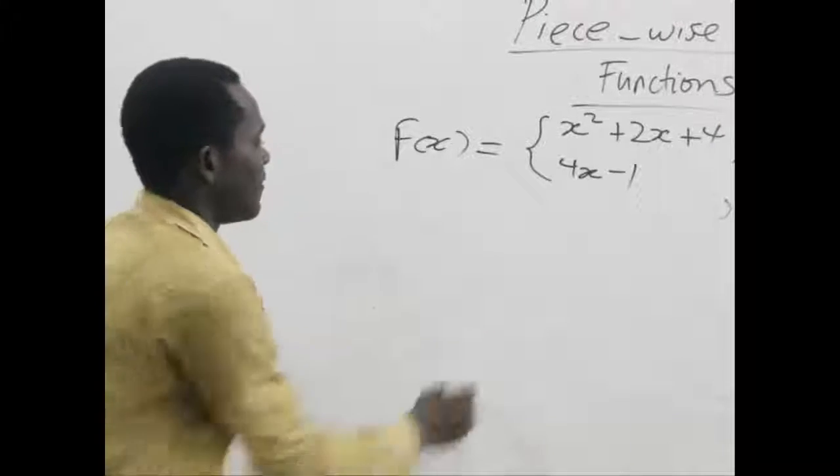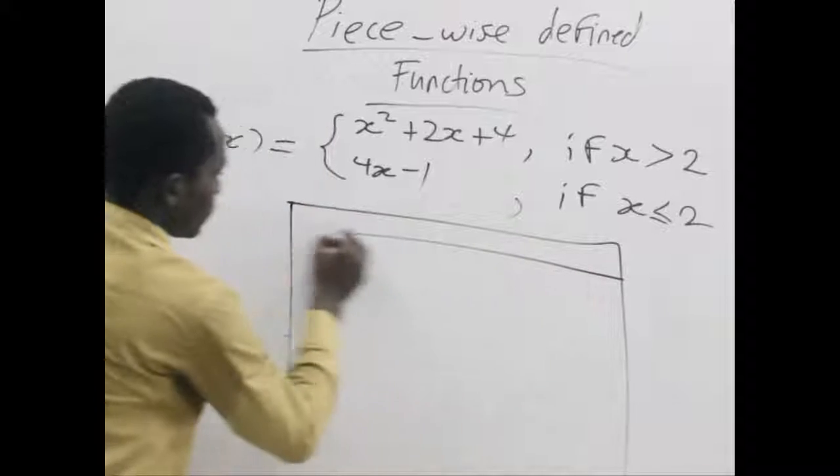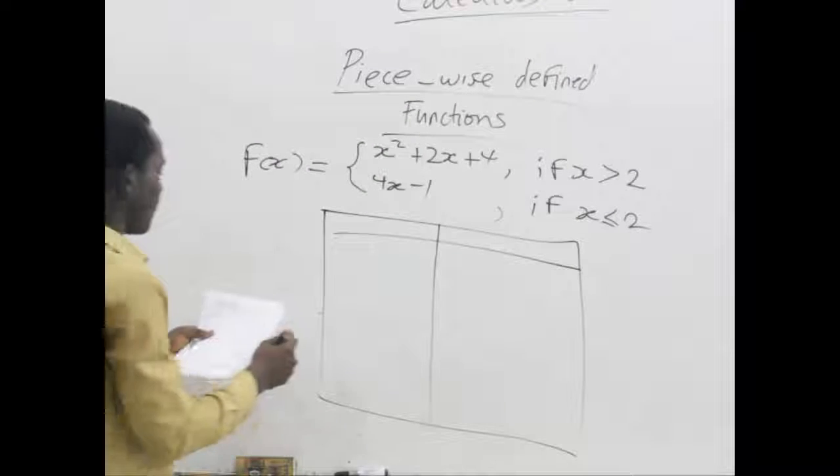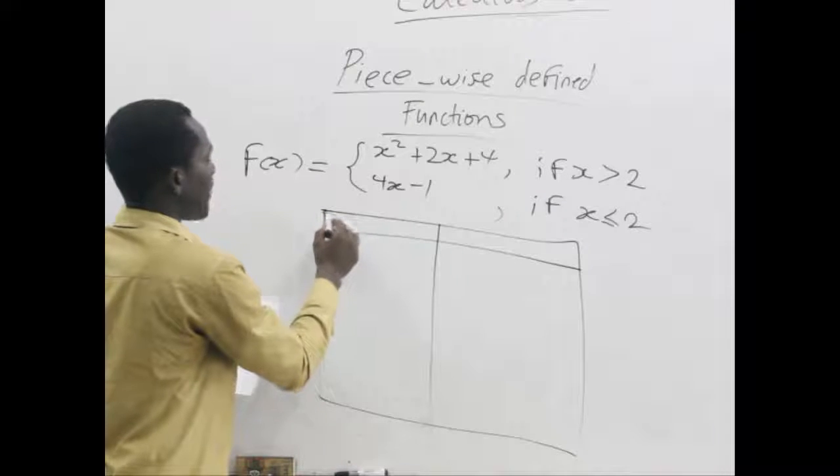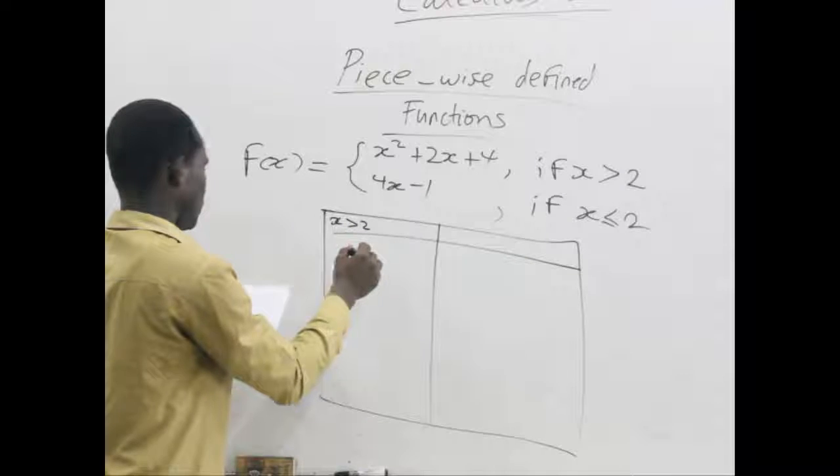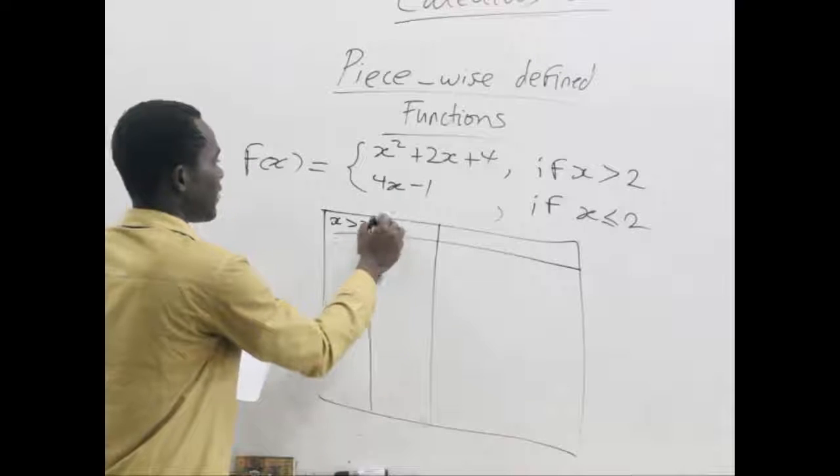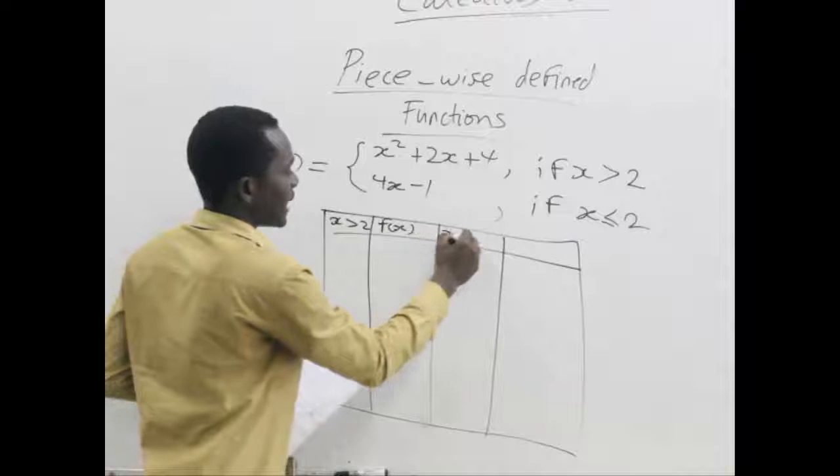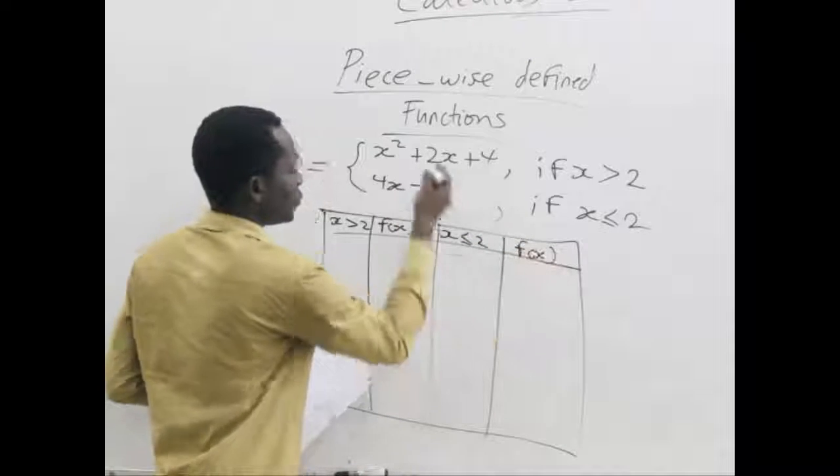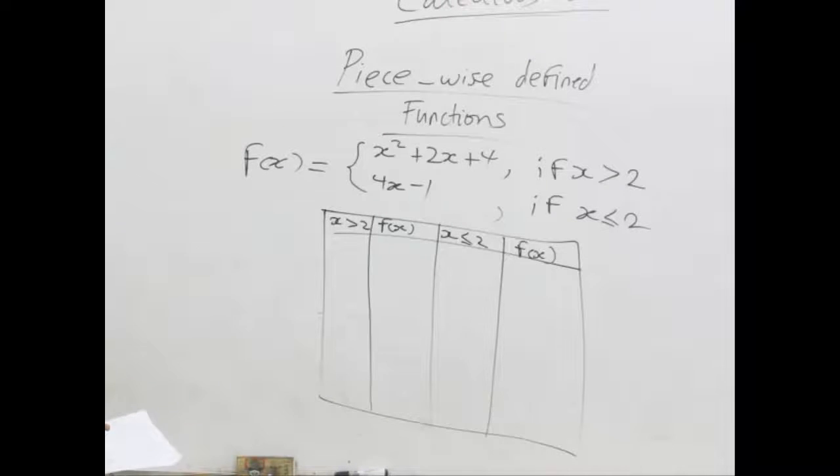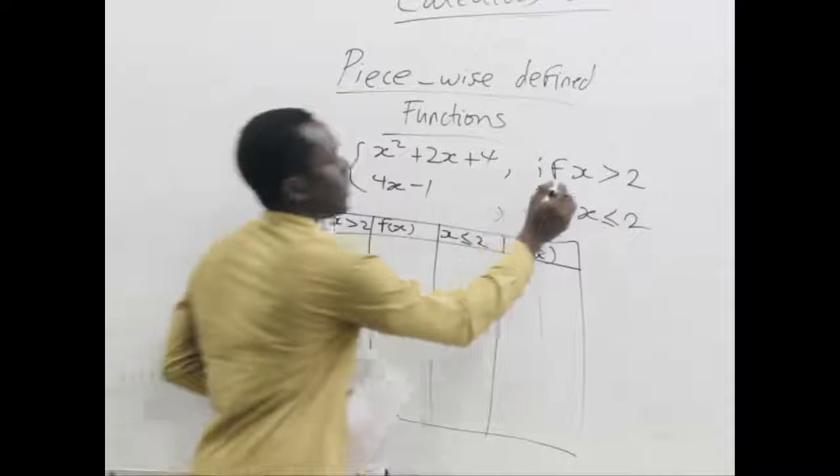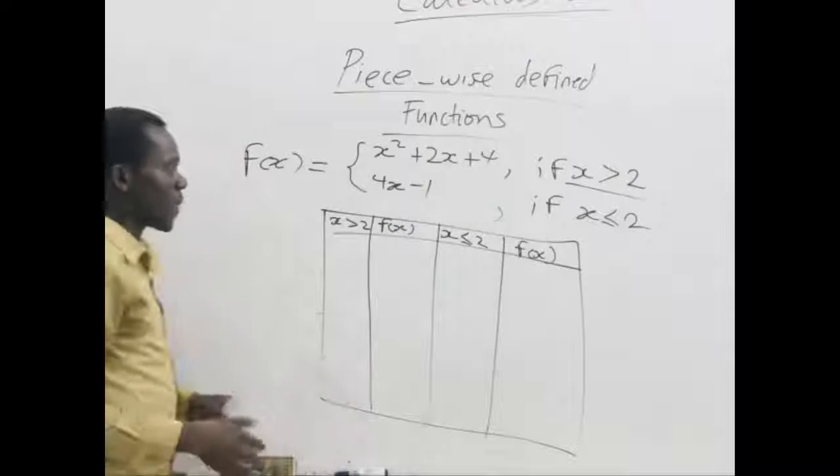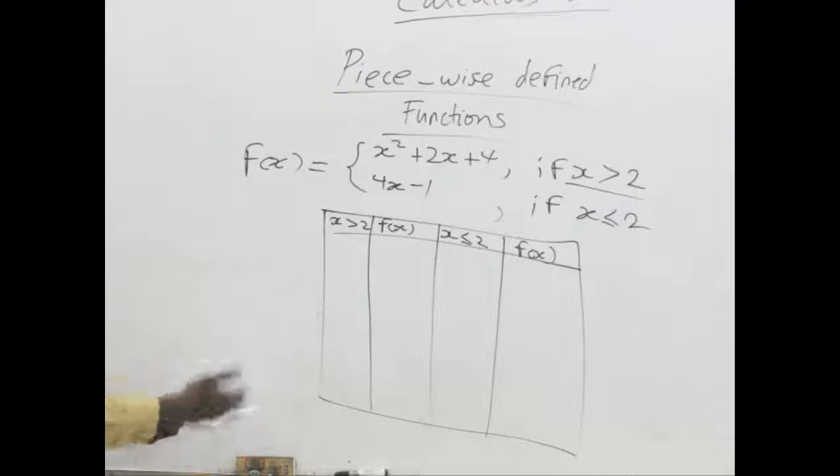So how do we plot such a function on the graph? First thing is we draw a table and find some values for our functions. For our first table, let's find the values of x which are less than 2. Let's find out what f of x would be. And also we take functions of x which have different functions all together.